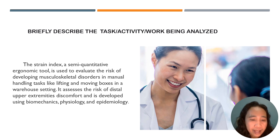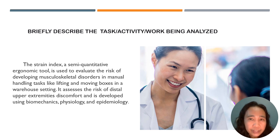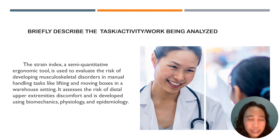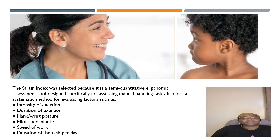Repeated tasks in the hands can lead to discomfort in the hands, wrist, and elbow. The strain index was proposed by Mori and Gerge in 1995 to assess job risk of work-related musculoskeletal disorder in the distal upper extremities — hands, wrist, and elbow. It was developed using existing knowledge of biomechanics, physiology, and epidemiology and used to assess a job, not a person.